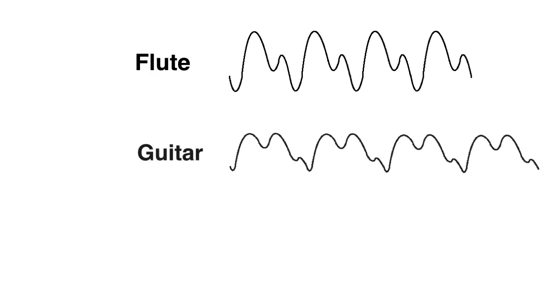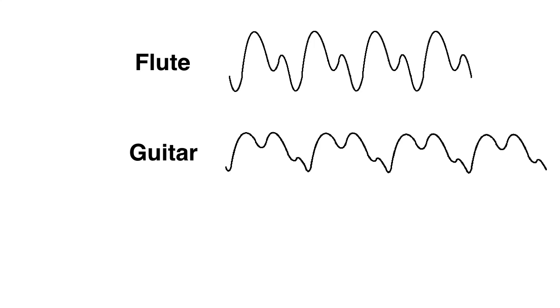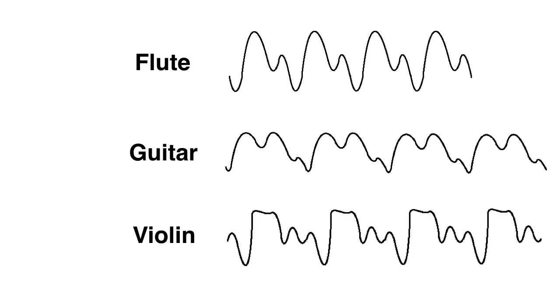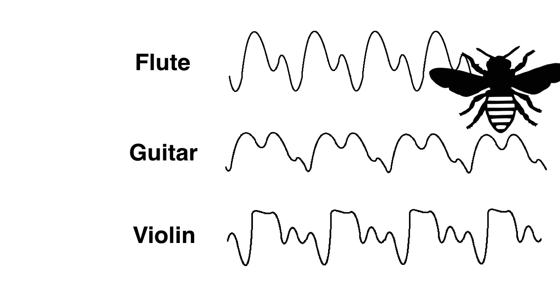To be a note it doesn't really matter how complicated the individual ripples are as long as the pattern repeats itself. And musical notes don't even need to be made by musical instruments. Anything that vibrates and disturbs the air in a regular pattern will produce a note. So a Formula One race car engine, for example, or a bumblebee will also create a note.